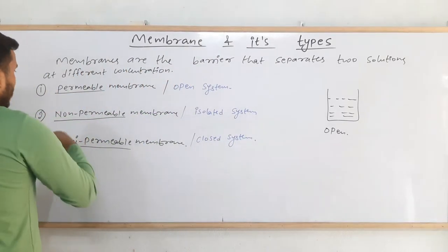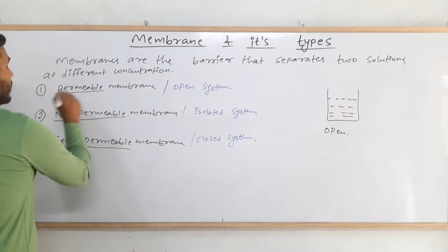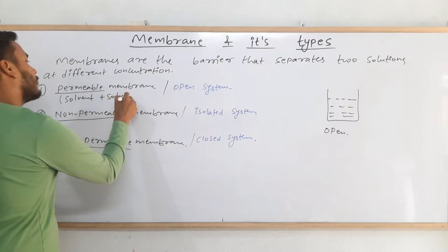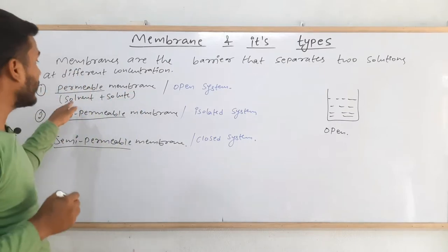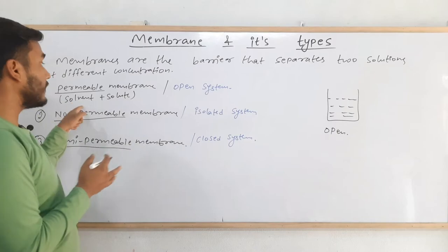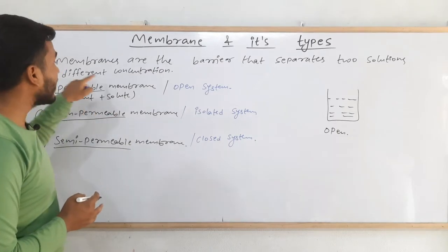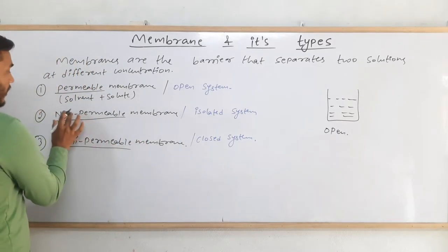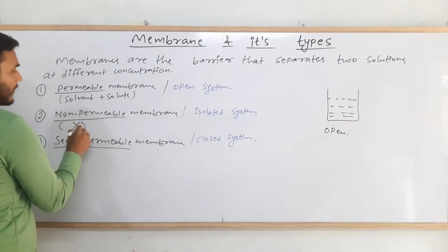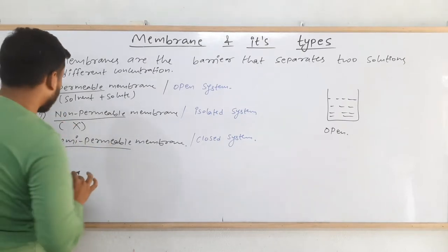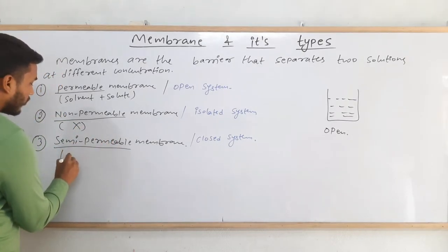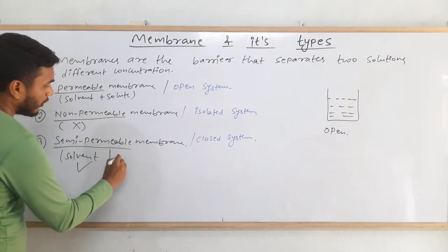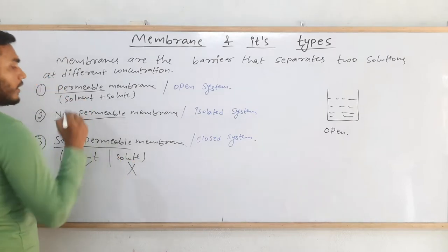A permeable membrane will allow both solvent and solute to pass through it. As we are talking about colligative properties, we need to talk about the flow of solvent and solute. Through a non-permeable membrane, nothing can pass through — it will just block them. A semi-permeable membrane will allow solvent to pass through it, but solute will not be able to pass through it.